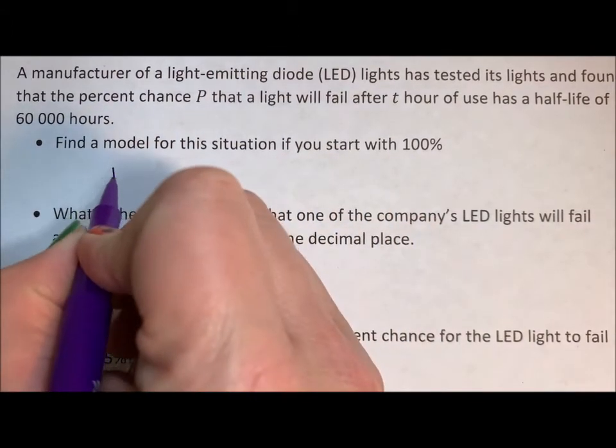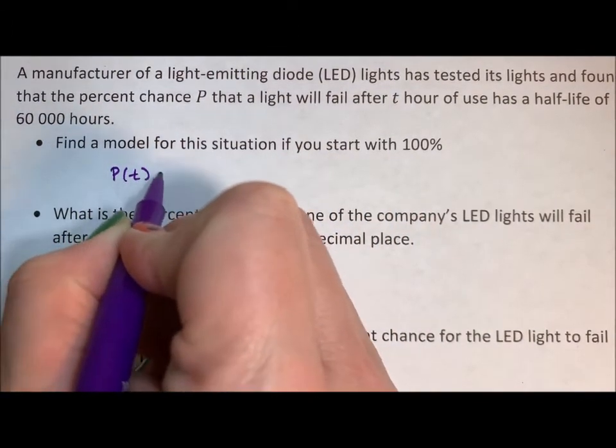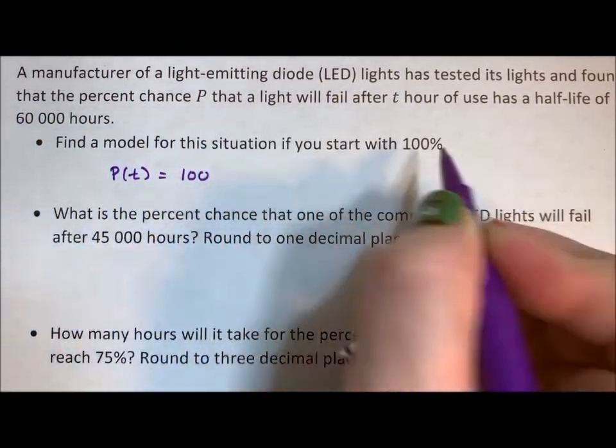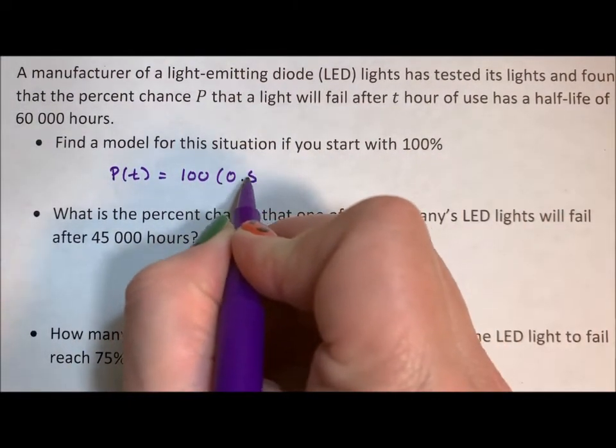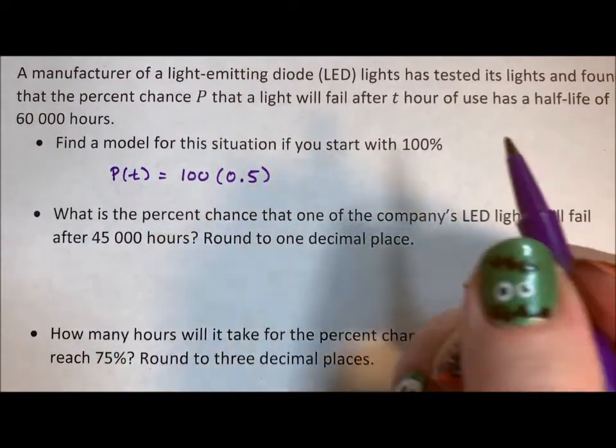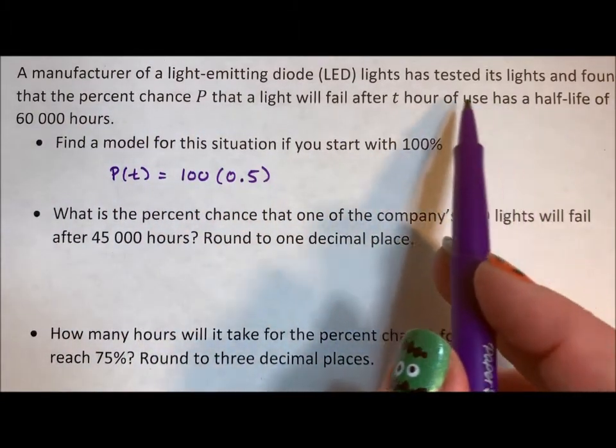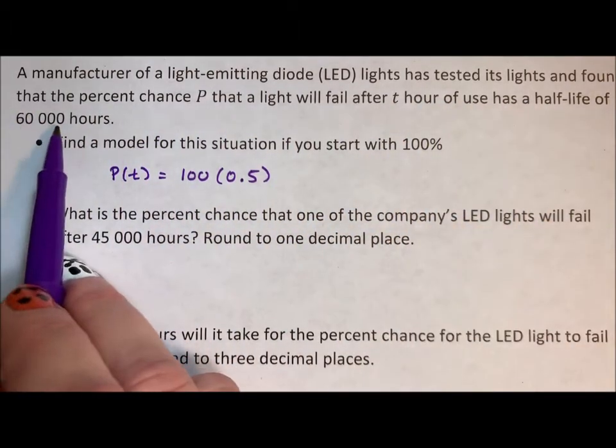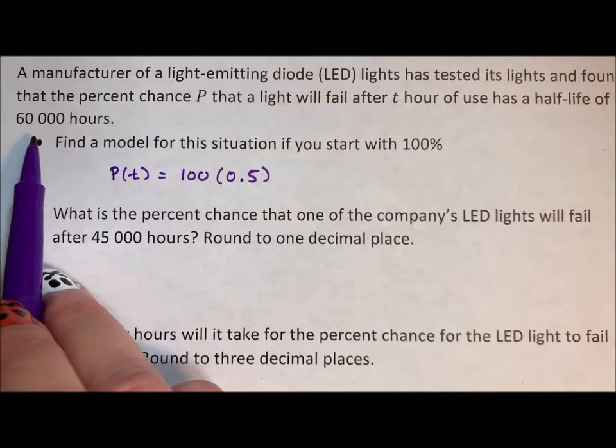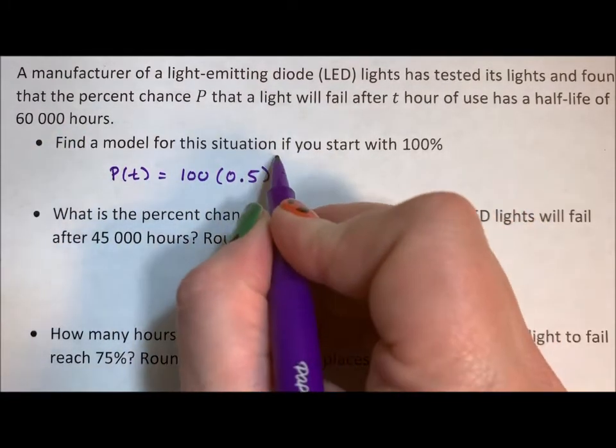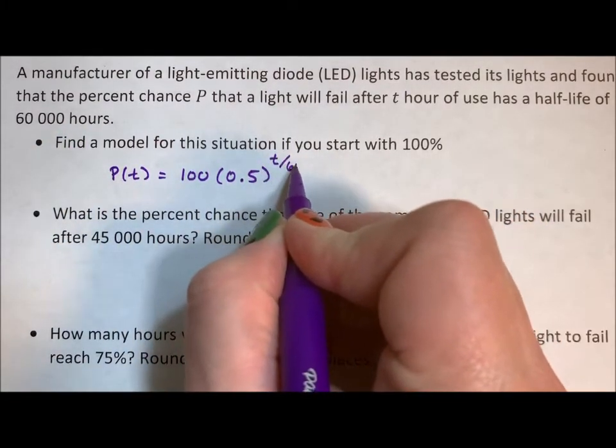So P(t), we start with 100. That's what that start with 100% means. Half-life is 0.5, and half-life of 60,000 hours means if we want this to be an hourly situation, that means we take the t and divide by the 60,000.